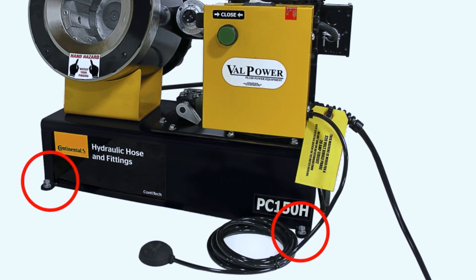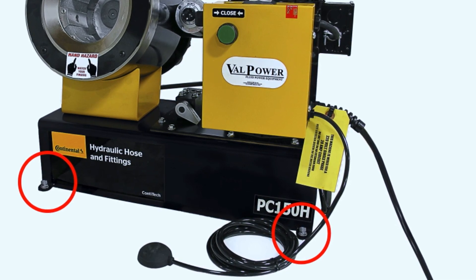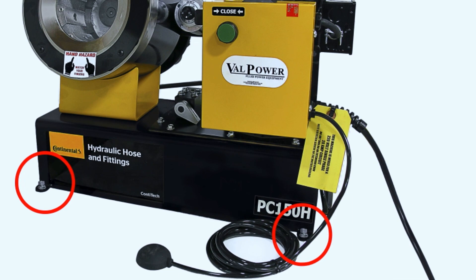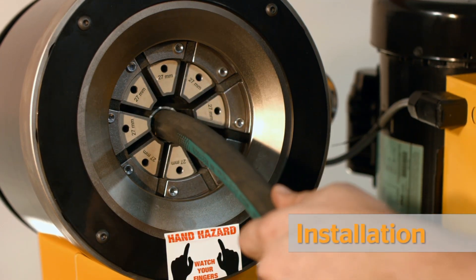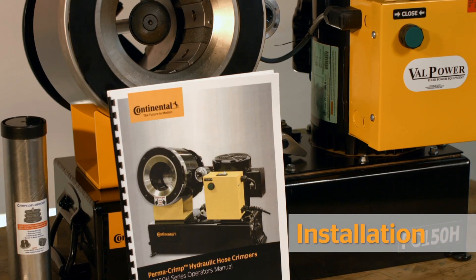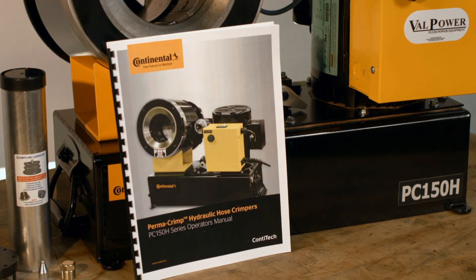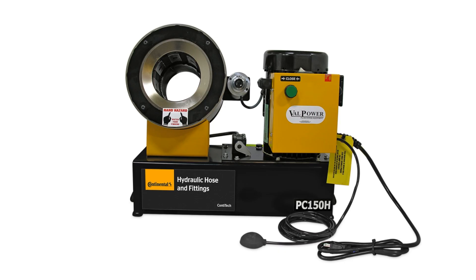Your Crimper should be bolted directly to the workbench in such a way that a hose assembly may be inserted and removed easily without making contact with the work surface. Detailed mounting instructions are included with your unit. When moving the device, always use the handles on the side of the unit, remembering to use proper lifting techniques as the Crimper is top-heavy.